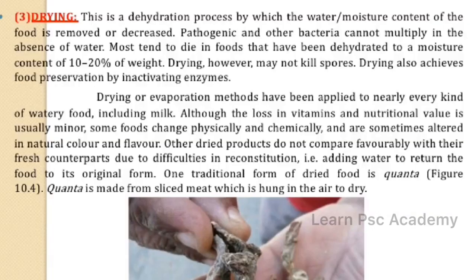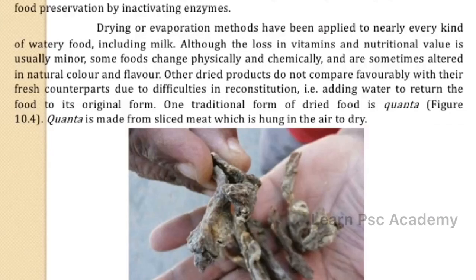The third method is drying, also known as dehydration. Water and moisture are removed from the food, which inhibits the growth of bacteria and other microorganisms. However, when water is removed, vitamins and nutritional values may also be lost. Physical and chemical properties of the food change, including natural color and flavor.